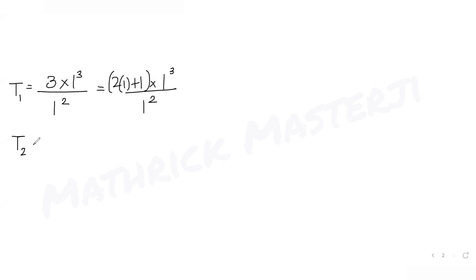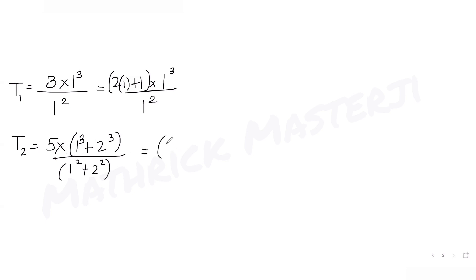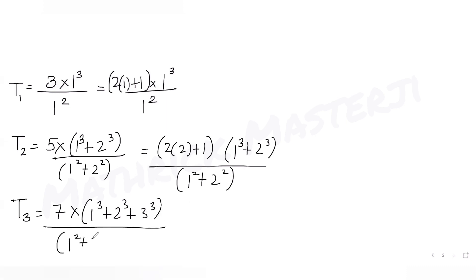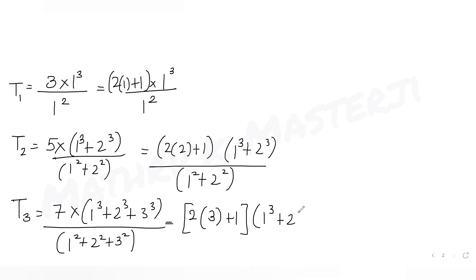For the second term, that is 5 into (1³ + 2³) upon (1² + 2²), I can write 5 as 2 into 2 plus 1. So I'm writing it in terms of 2, multiplied by (1³ + 2³) divided by (1² + 2²). Similarly, the third term is 7 into (1³ + 2³ + 3³) upon (1² + 2² + 3²), and 7 can be written as 2 into 3 plus 1.